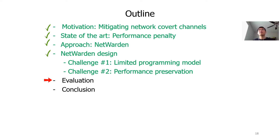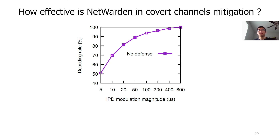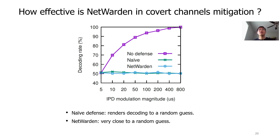Next, I will show you the evaluation results of Netwarden. We developed a Netwarden prototype running on an Intel Tofino switch, with about 5,500 lines of code. We assume there is an attacker who wants to leak an AES key via covert channels. We test Netwarden with real-world applications and have two baselines: no defense means no covert channel defenses are deployed, and naive defense means the defense does not have performance boosters. We first evaluate the effectiveness of Netwarden in covert channel mitigation. The X-axis is IPD magnitude, and the Y-axis is the decoding rate. When there is no defense, the decoding rate can reach 100% accuracy when the IPD is 800 microseconds. When we apply the naive defense, it reduces the decoding rate to a random guess. Netwarden is also very close to a random guess, so Netwarden can mitigate covert channels effectively.